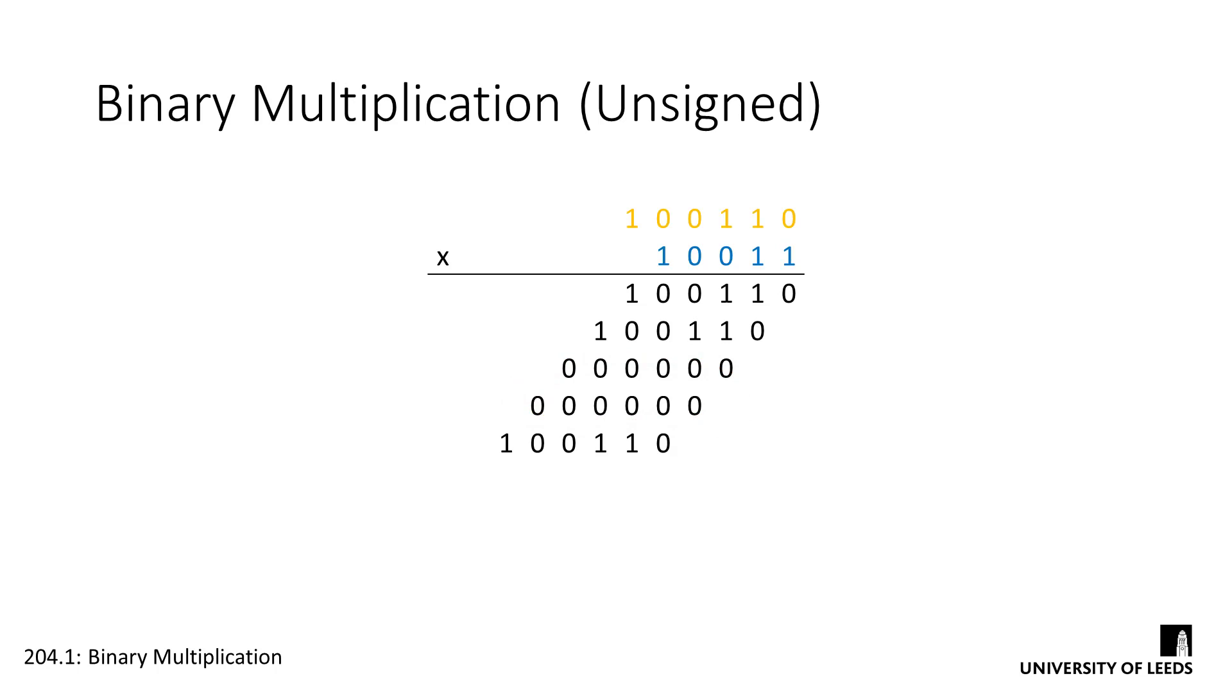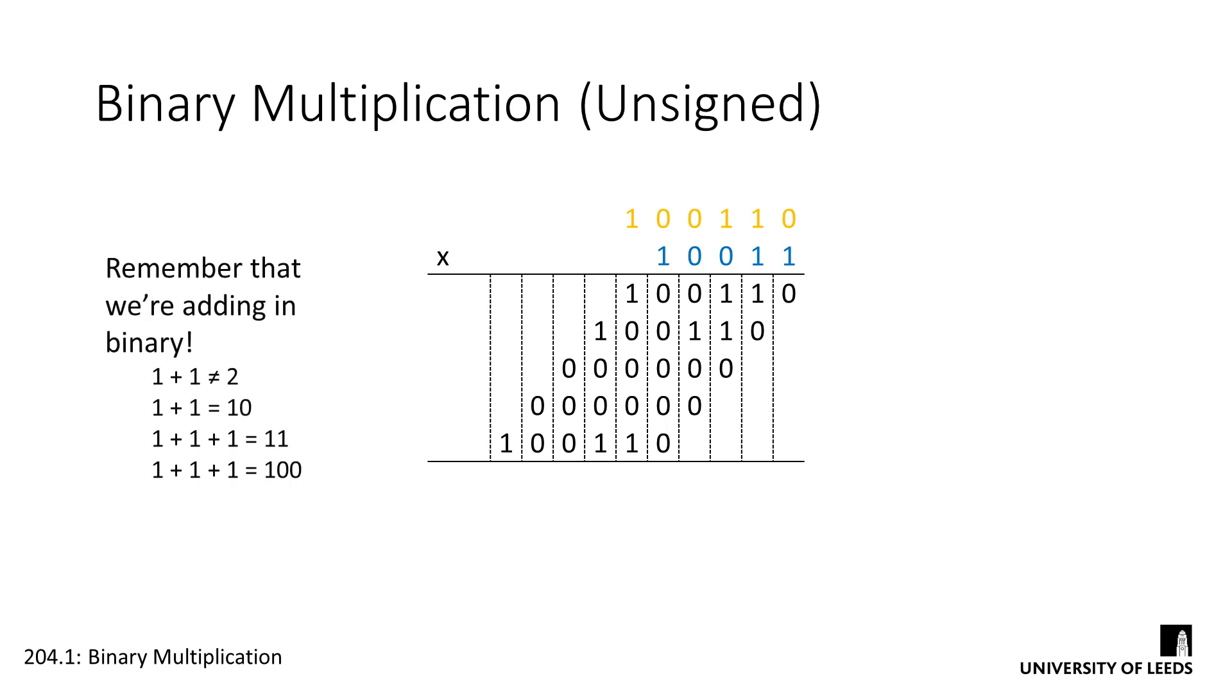So once we've generated all of our partial products, we can add up the columns to get our final result. Remember here that we're adding in binary. 1 plus 1 doesn't equal 2. It equals 1, 0.